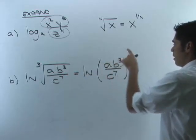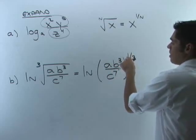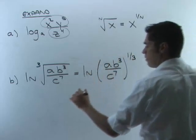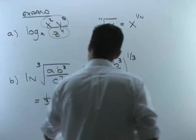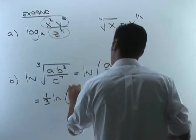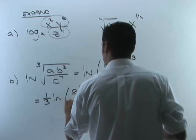Now, before I can get in here to the fraction, I've got to take care of this power. I'm going to use that property that allows us to pull the power out in front. So I pull a one-third out in front. I have natural log. Then sitting in here is ab cubed over c to the seventh.